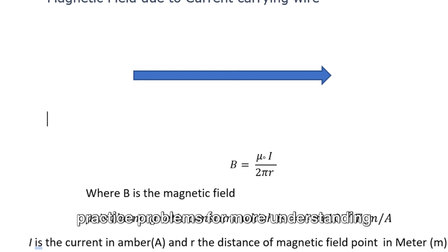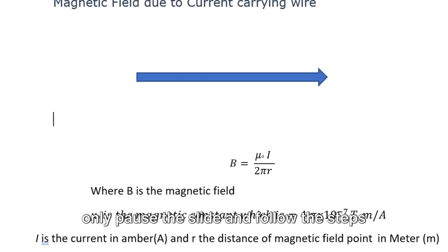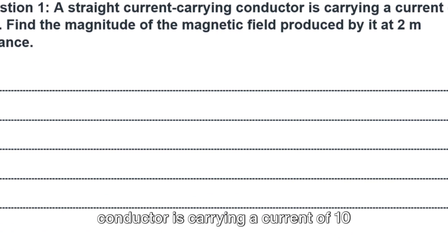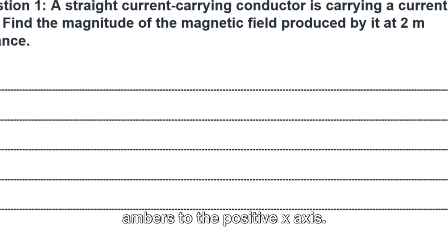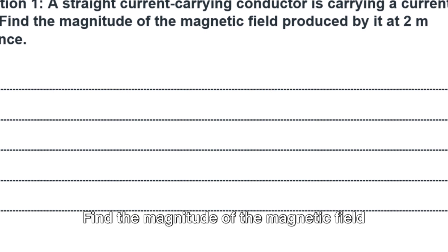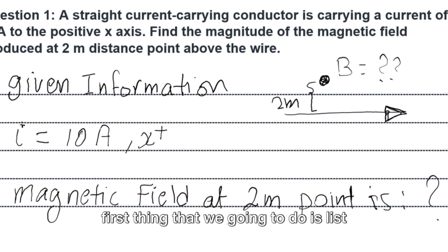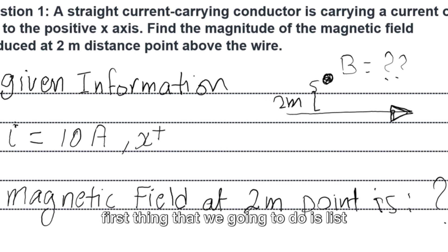So let us do practice problems for more understanding. Pause the slide and follow the steps. Question 1: A straight current carrying conductor is carrying a current of 10 amperes to the positive x-axis. Find the magnitude of the magnetic field produced at 2 meter distance point above the wire. First thing we're going to do is list the given information.